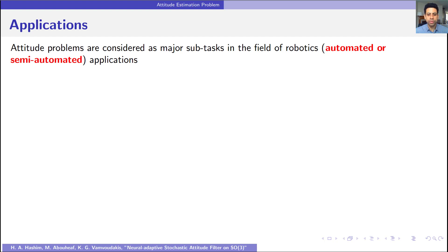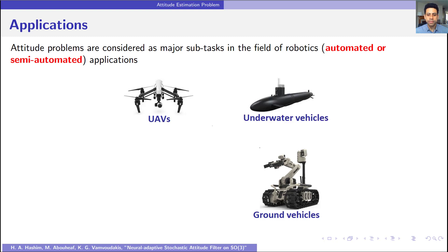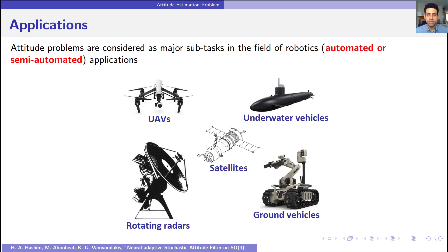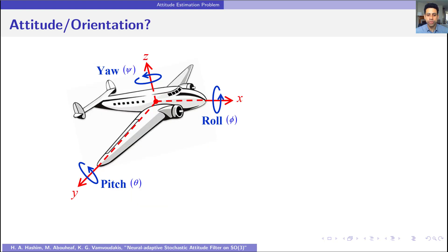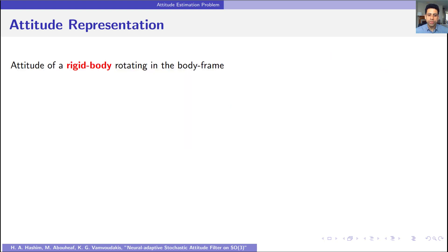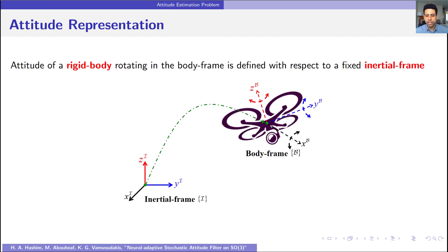The attitude estimation problem is an essential task in majority of robotics applications. Examples include unmanned aerial vehicles, ground vehicles, underwater vehicles, rotating radars, satellites, and others. The orientation or attitude of a rigid body can be defined through angle of rotation, such as roll angle, pitch angle, and yaw angle. Generally, the attitude in the body frame or rotating frame is defined with respect to a fixed inertial frame.